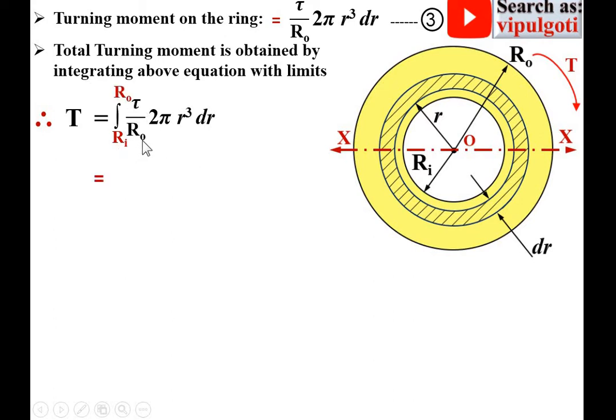So τ/Ro·2π is constant. Integrating r³·dr with limits RI to RO.